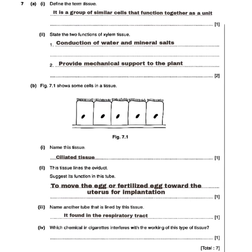Roman numeral number four is saying: which chemical in cigarettes interferes with the working of this type of tissue? The answer here is acrolein. Yes, it is acrolein.